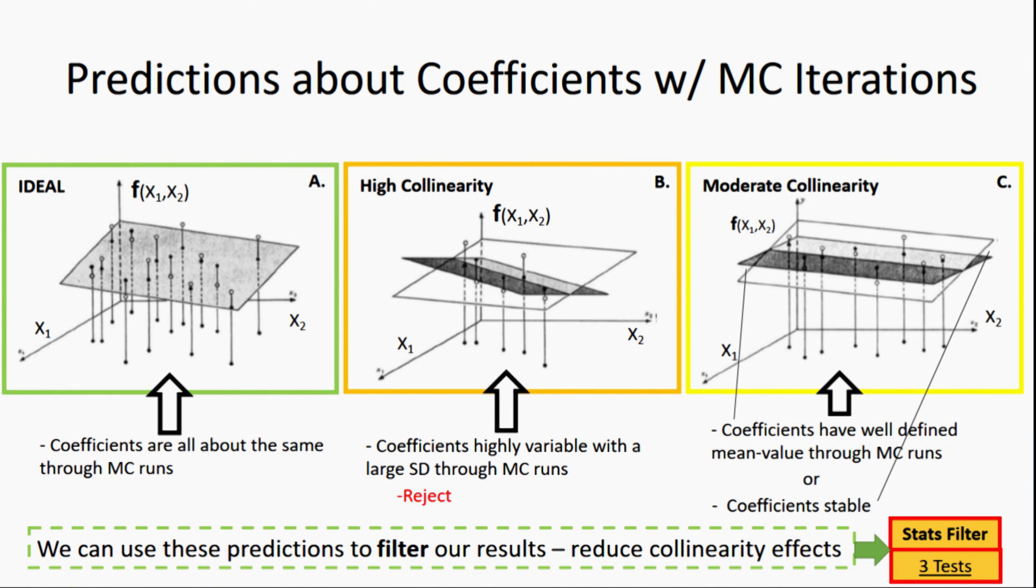As we do more and more iterations, we can make predictions about the coefficients in each of these cases. In the ideal case, our coefficients are all about the same through each Monte Carlo run. In the case of high collinearity, we're going to see coefficients which are highly variable with a large standard deviation. We want to reject this data. But we might have the case of moderate collinearity where our coefficients have a well-defined mean value, are normally distributed, or the coefficients are stable.